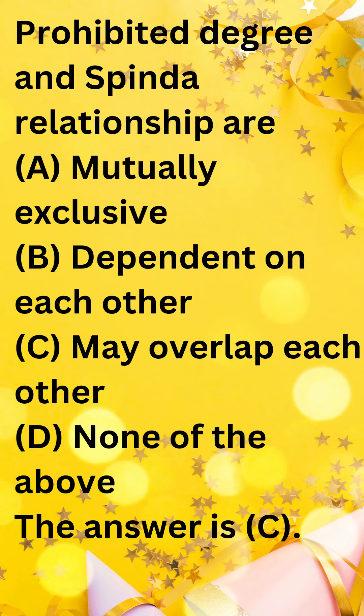Prohibited Degree and Sapinda Relationship are: A. Mutually Exclusive, B. Dependent on Each Other, C. May Overlap Each Other, D. None of the Above. The answer is C.